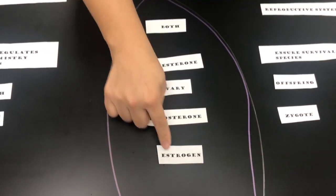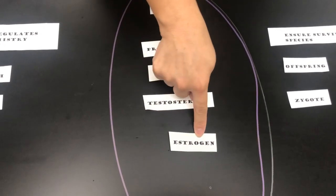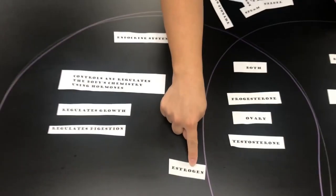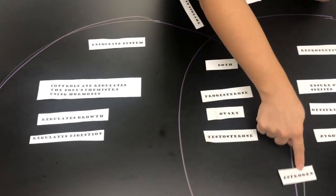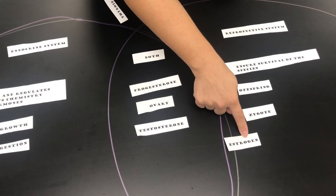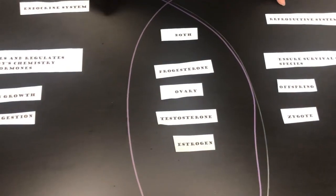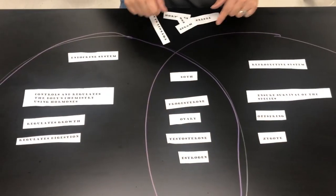Estrogen was also the second type of hormone that females produce, and it's part of the reproductive system as well. So estrogen goes under both—part reproductive and part endocrine.